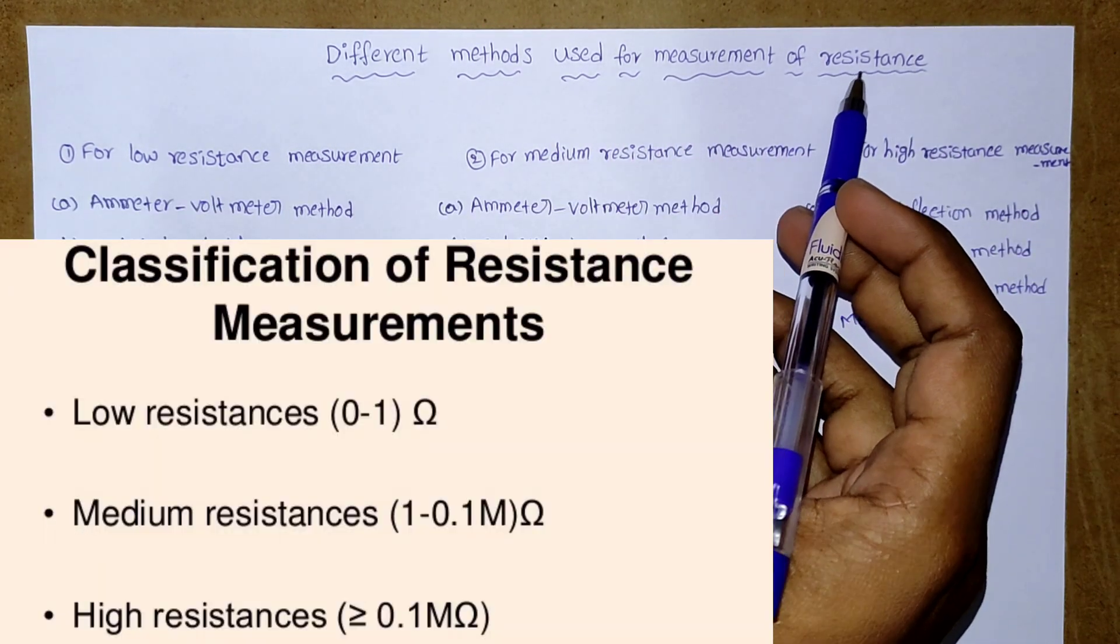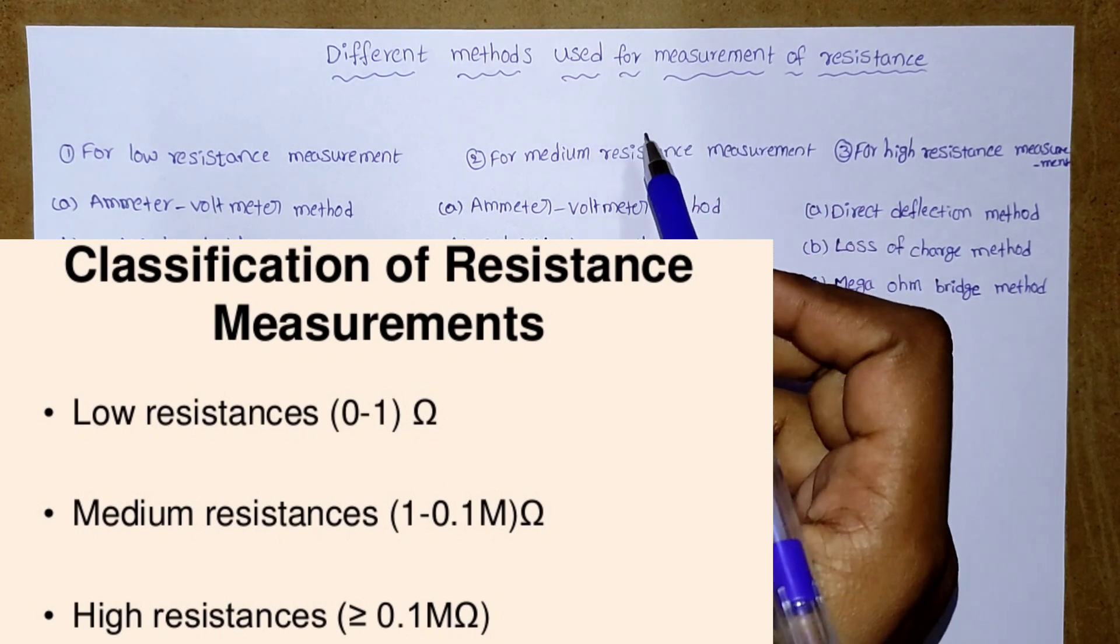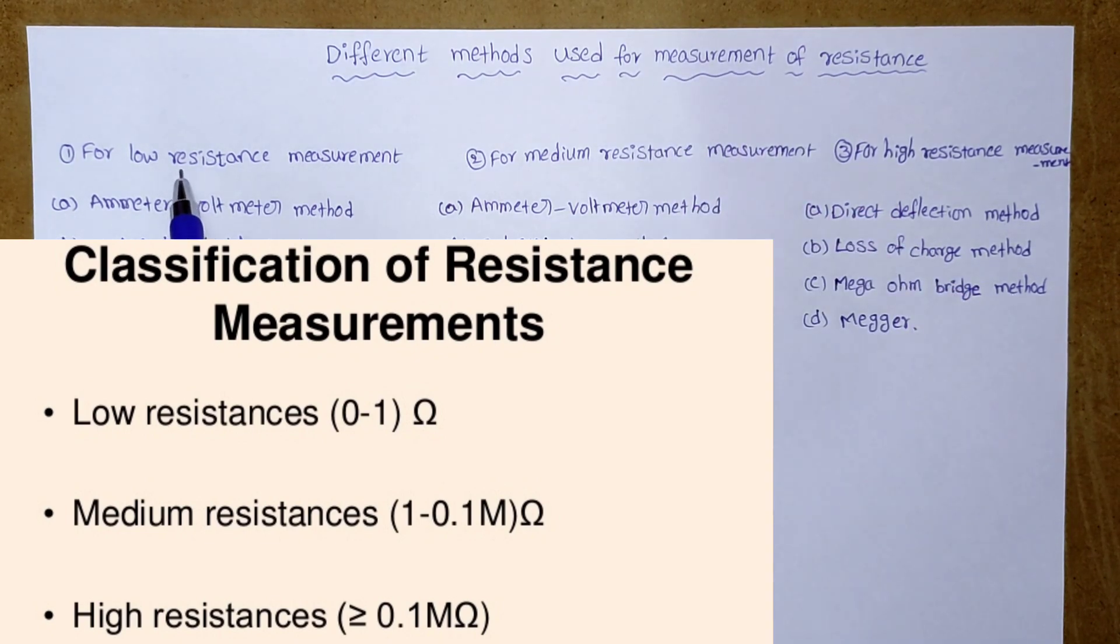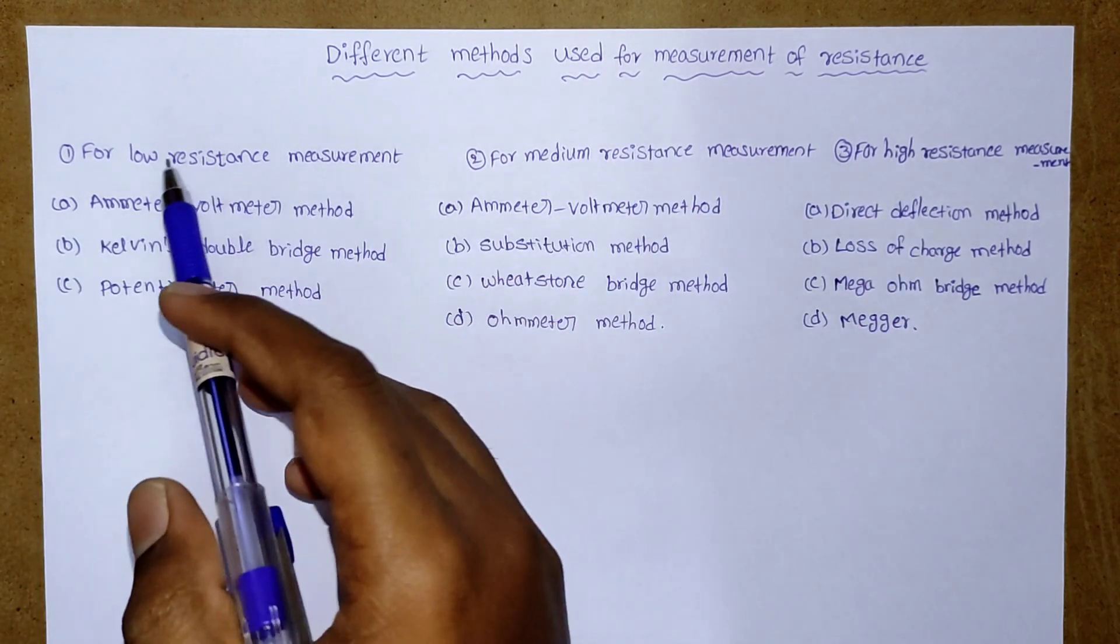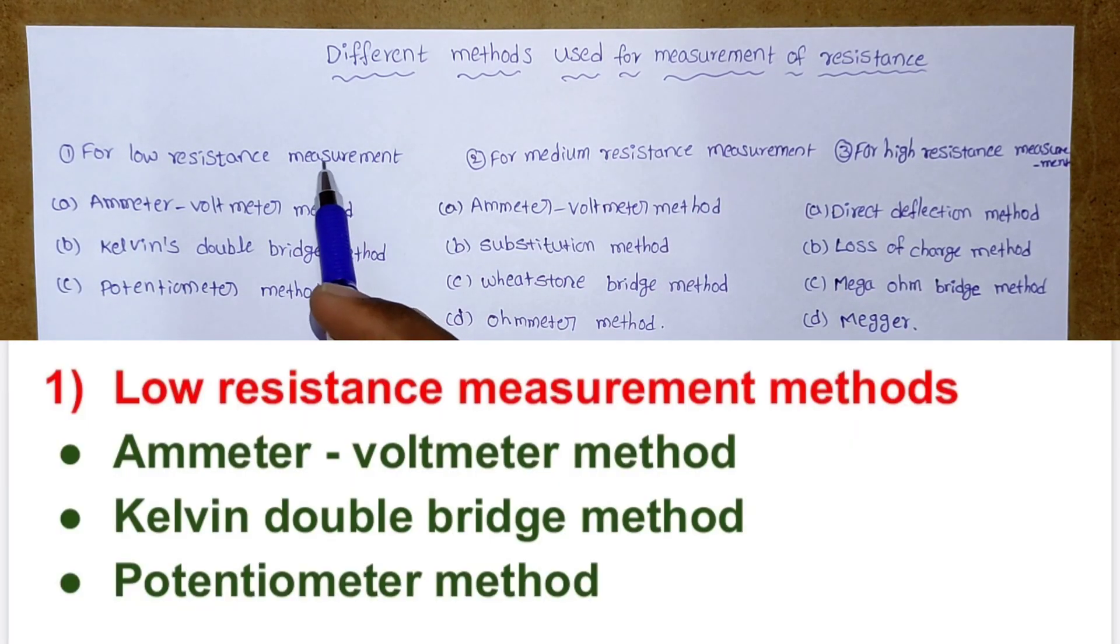Resistances are broadly classified into three groups: low resistance, medium resistance, and high resistance. For low resistance measurements, these methods are available.